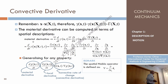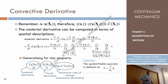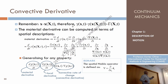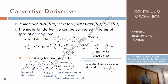That is what we have done before, for instance in the case of density. We could take the spatial description of the density, replace in that the equations of motion, and obtain the material description of the density. Then we can take the derivative.